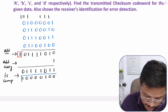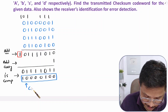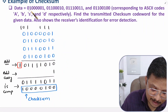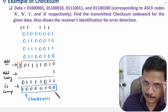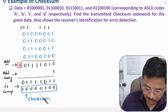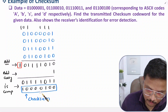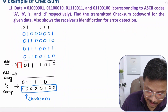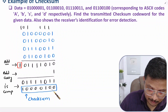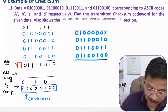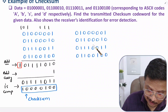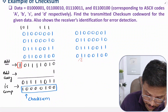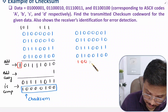This checksum is my parity data. When the transmitter sends the data, it sends this data along with the checksum. So this checksum will also be forwarded to the receiver along with the original data.